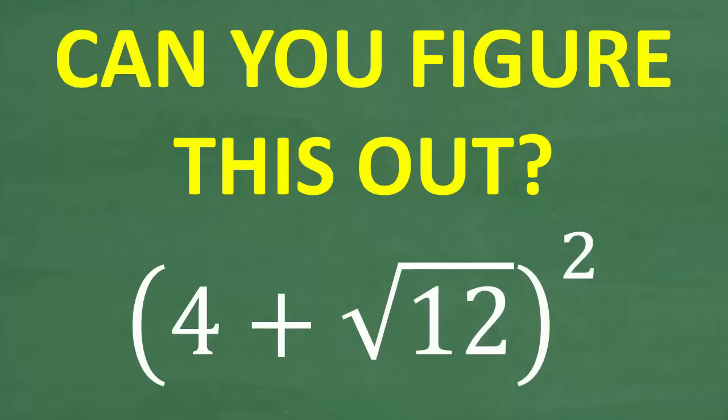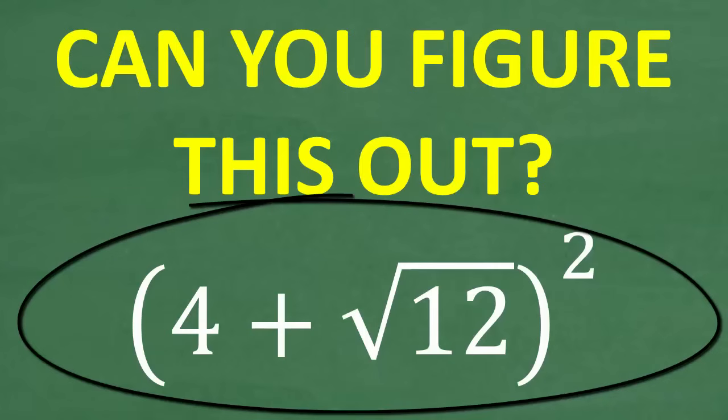How well do you actually understand how to multiply numbers that involve a sum or difference and a square root? Something like this situation right here. If you're pretty good with working with sums and differences of square roots and multiplication, this should be a very easy problem to figure out without the aid of a calculator. So let's take a look at this problem. We have parentheses: four plus the square root of 12, squared.